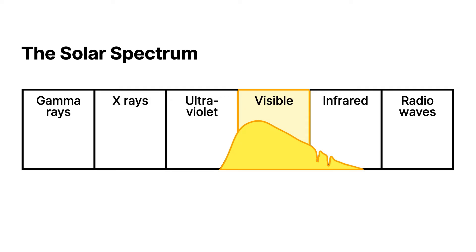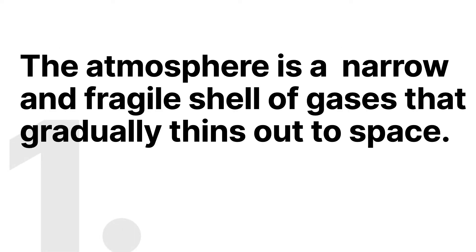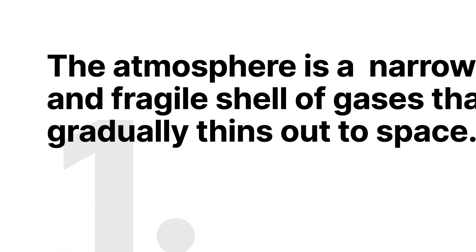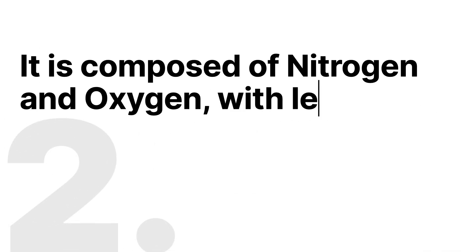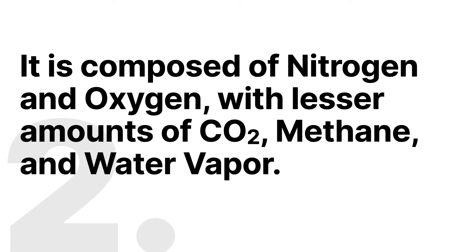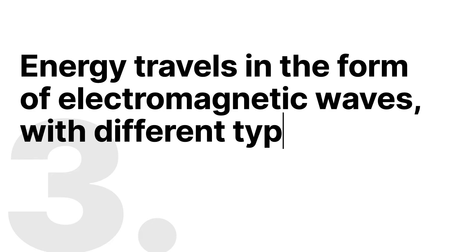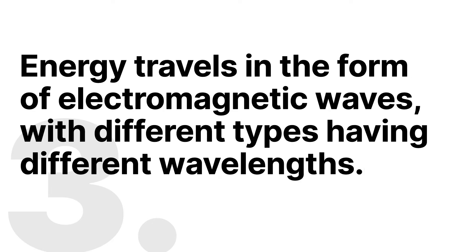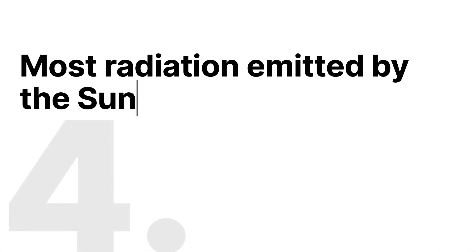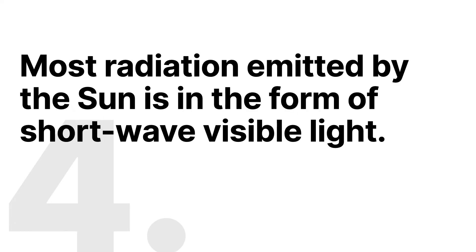That's what we can see with our eyes. So let's pause here and sum up what we've gone through so far — four key things. Number one, the atmosphere is this narrow, fragile shell of gases that gradually thins out to space. Number two, it is composed mainly of nitrogen and oxygen, and then there are lesser amounts of CO2 (carbon dioxide), methane, and water vapor. Number three, energy travels in the form of electromagnetic waves, with different types of energy having different wavelengths. And number four, most of the radiation emitted by the sun is in the form of fairly short wave visible light.